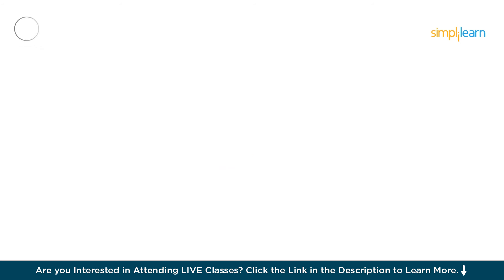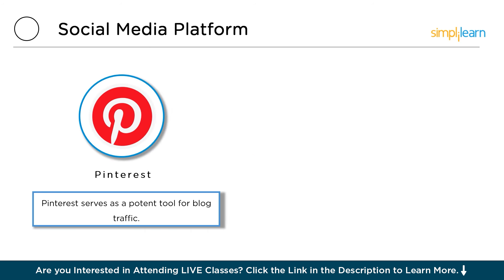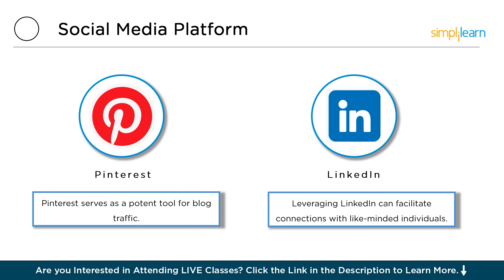Next, let's talk about social media platforms. Social media platforms are powerful tools for promoting your blog and engaging with your audience. Each platform has its own strengths and audience demographics, so choose the ones that best match your blog's niche and goals. Pinterest serves as a potent tool for blog traffic, particularly for visually oriented niches such as food, DIY, and travel. Craft engaging pins that direct users to your blog content, optimizing them with relevant keywords for enhanced discoverability. Leveraging Pinterest's visual appeal and search functionality can significantly amplify your blog's reach and engagement, fostering a thriving online presence.